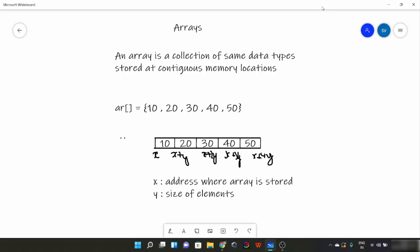And it stores at contiguous memory locations. Now suppose this is an example of an array. It contains five elements of same data type int: 10, 20, 30, 40, 50. These all are integer data type and they are stored in our array.